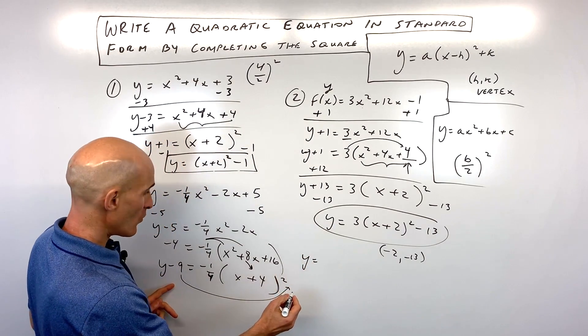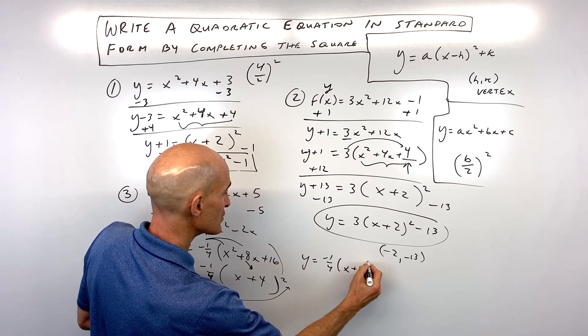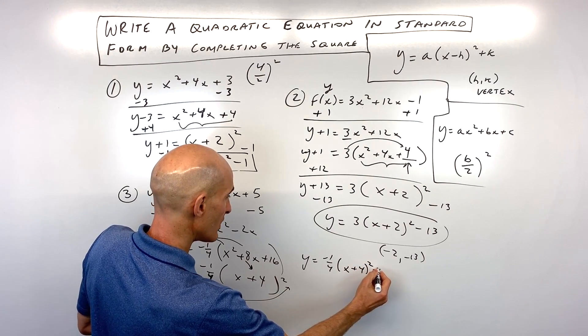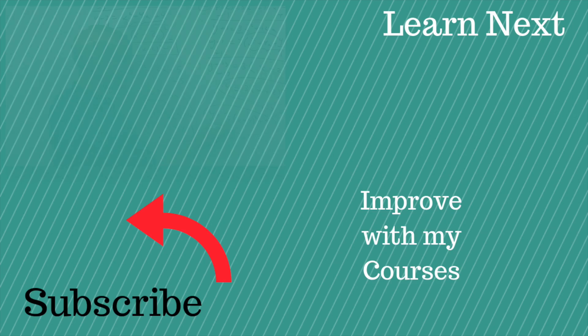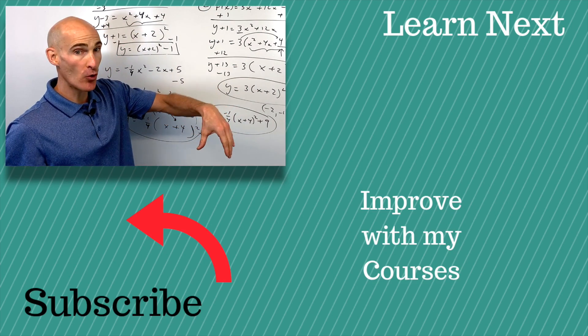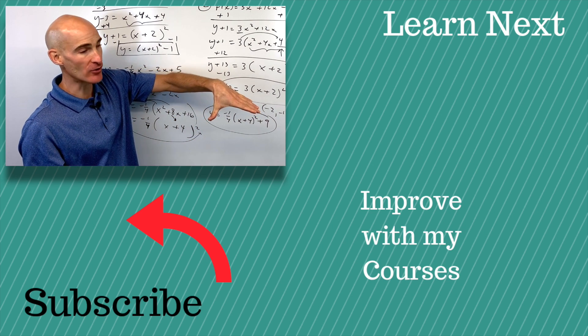So our final result is going to be y equals negative 1/4 times x plus 4 squared plus 9. And our vertex is going to be negative 4, positive 9. Notice the a value is negative. That means it's opening down. The 1/4 is going to compress it. So it's going to be like a little bit wider like that.